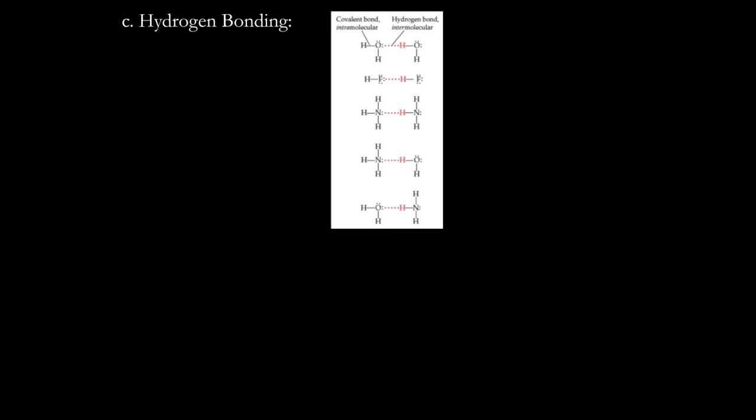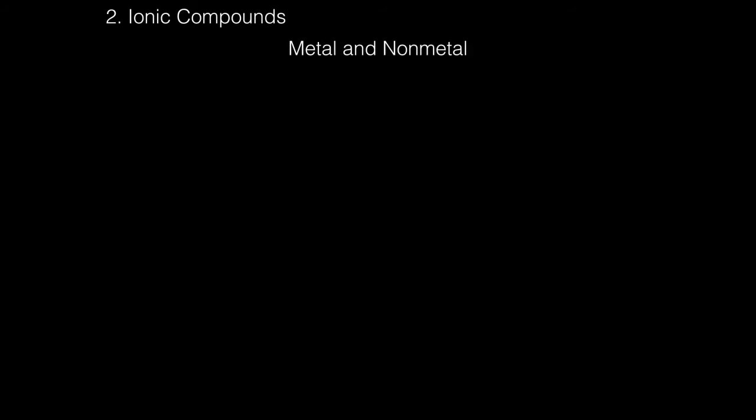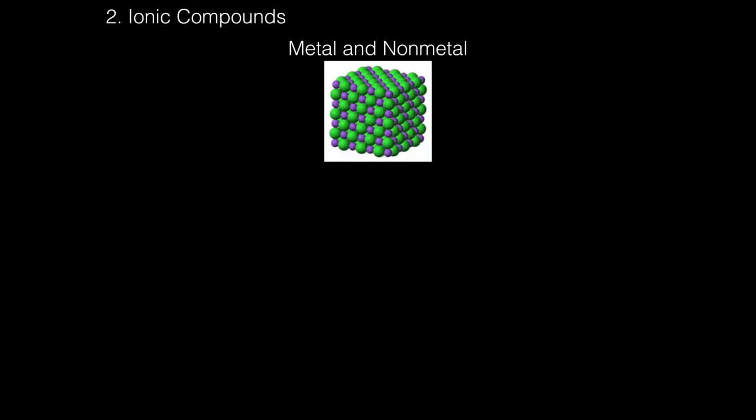We've talked about intermolecular forces for atoms and molecular compounds — which involve non-metals bonded to non-metals. But for a metal and a non-metal, you have ionic bonding. In ionic bonding, you have a lattice structure, so you don't have London dispersion, dipole-dipole, or hydrogen bonding. What attracts the ions together is the lattice energy — the bond between positive and negatively charged ions — which is much stronger because it is actually an intramolecular force within the compound.